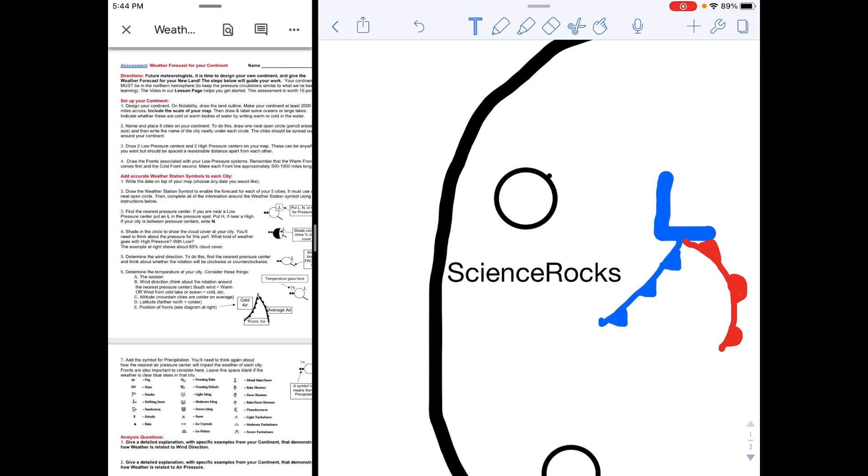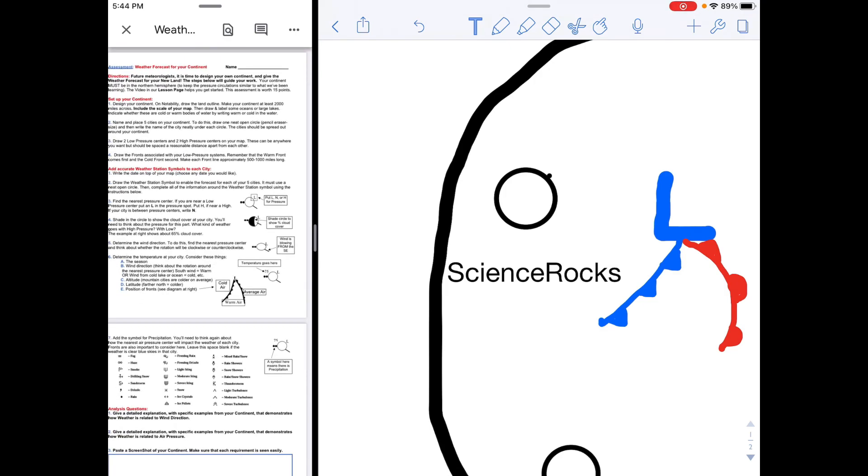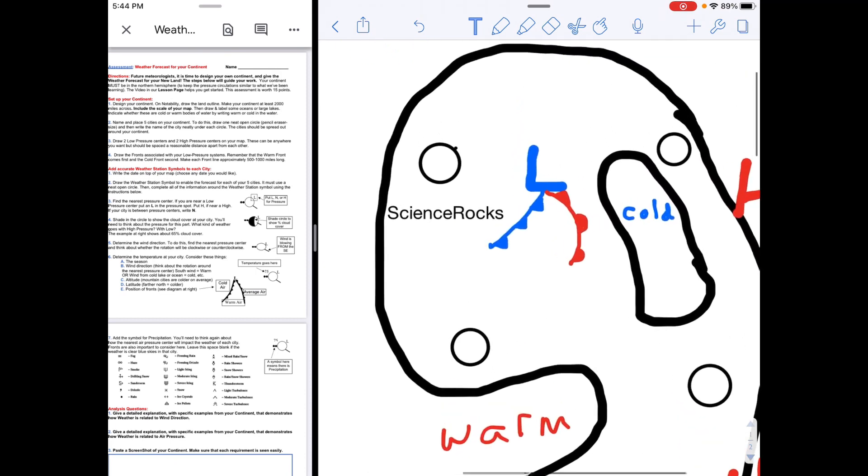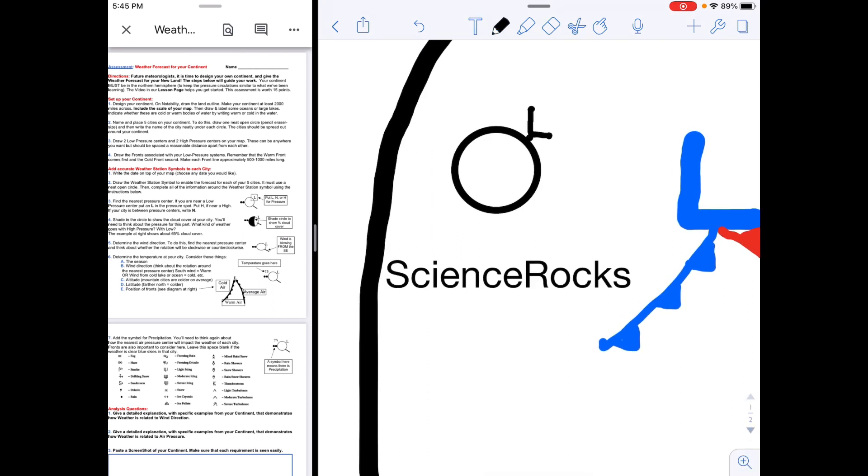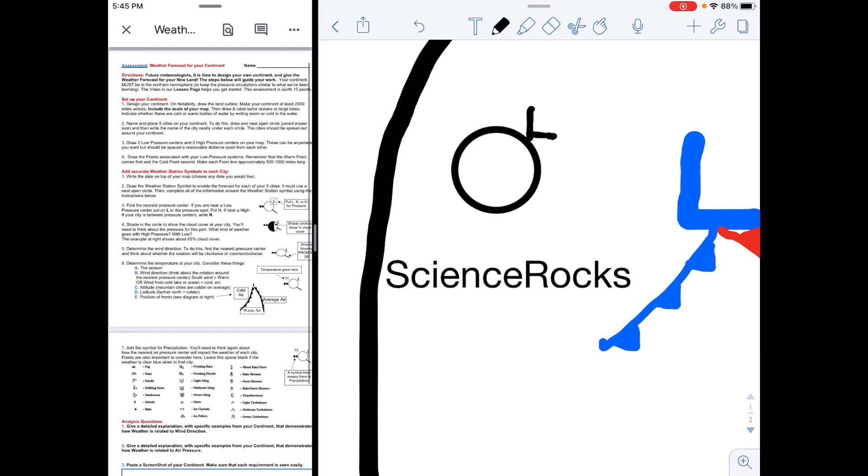So I need to begin with step three now on the weather station symbols. I find the nearest pressure center, and I am nearest, if I look on my whole continent, I am nearest the low pressure system. So I put a low pressure system there—that's a capital L—and I put that. Typically on a weather station symbol they would have the actual pressure numerical value there, but all you're going to have to do is L if it's low, H if it's high...